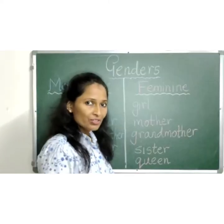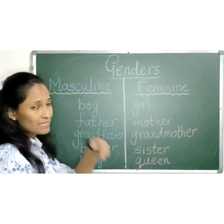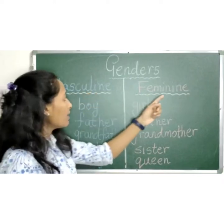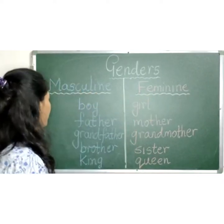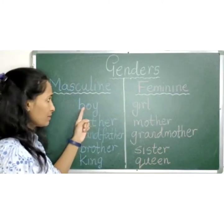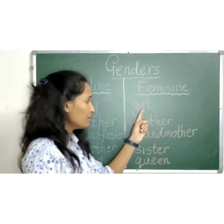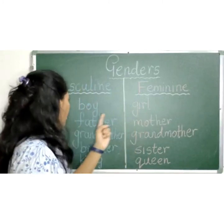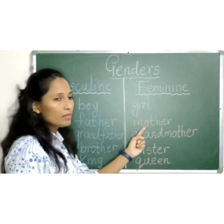Okay children, now let's see some examples of masculine and feminine genders. Boy is masculine, and feminine is girl. Boy — girl. Father — mother.